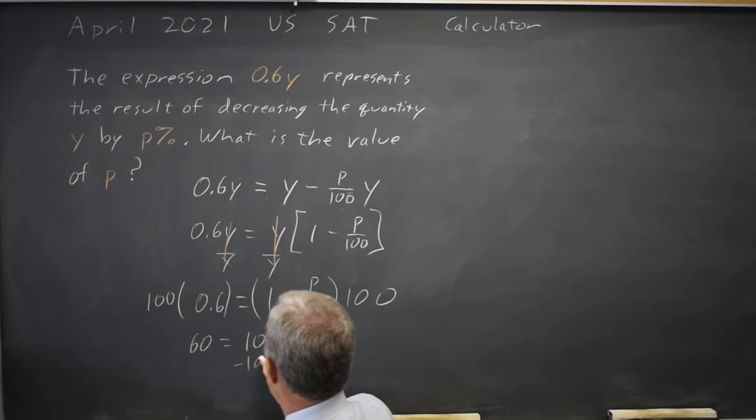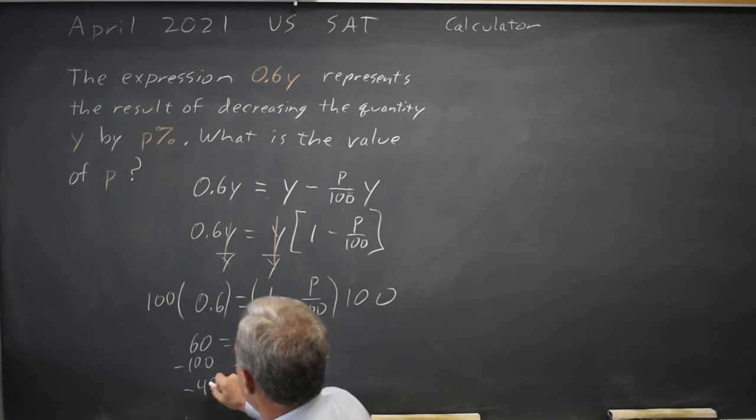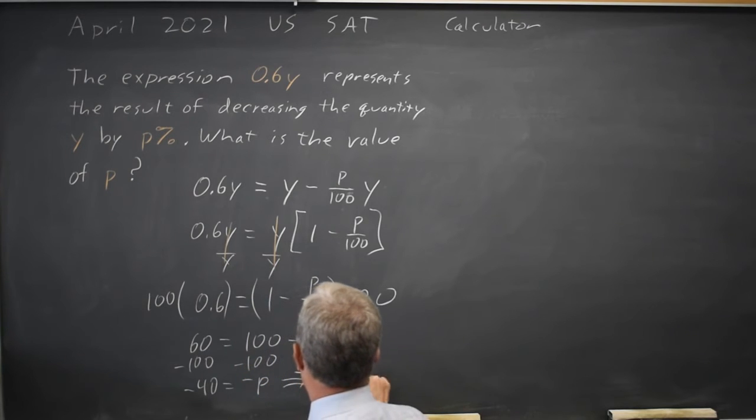Subtract 100 from both sides. Negative 40 equals negative P. So P equals positive 40.